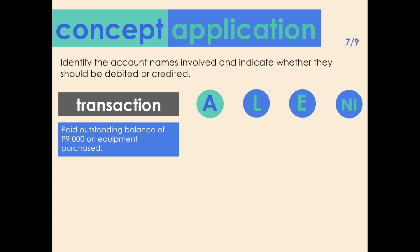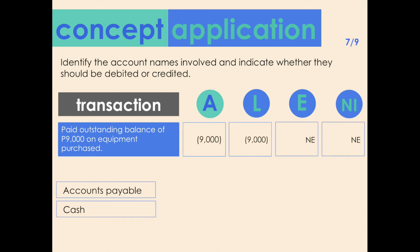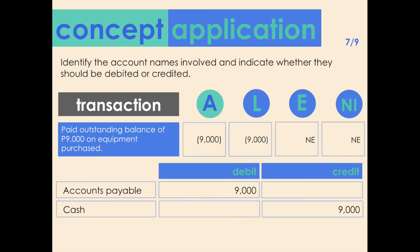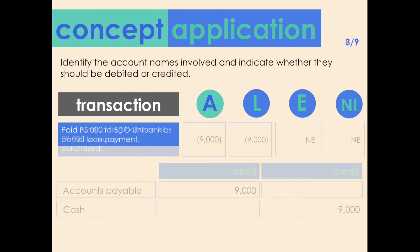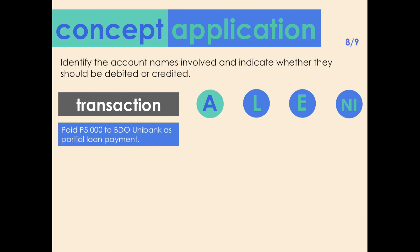Transaction seven: paid outstanding balance of 9,000 pesos on equipment purchased. Accounts affected: accounts payable and cash. The payment decreases assets by 9,000 and also decreases liabilities by the same amount. Since there is a decrease in accounts payable, it should be debited. The decrease in cash also means cash should be credited.